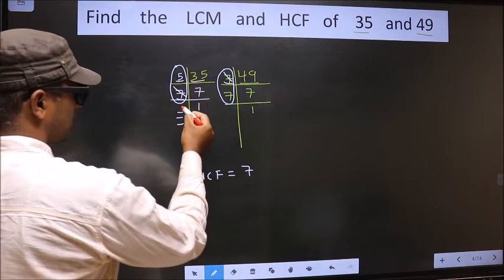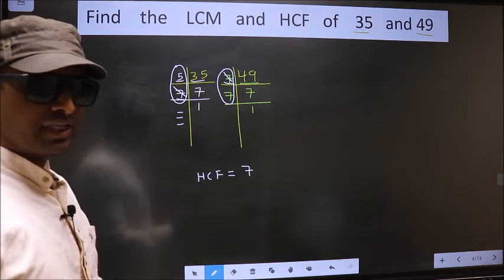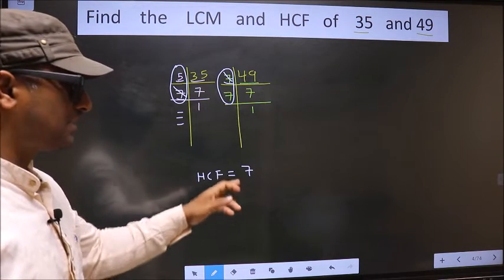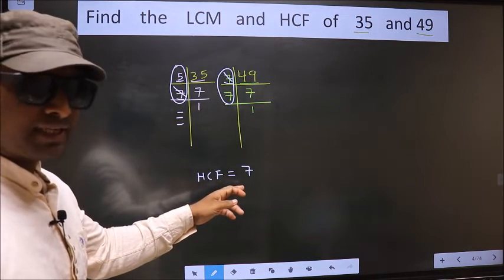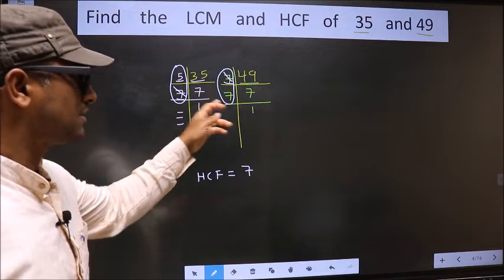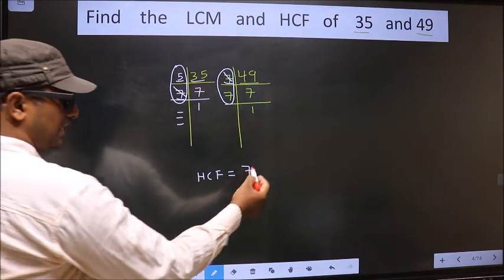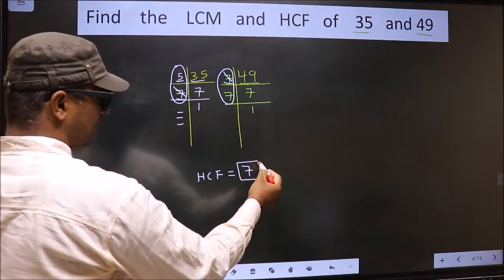No more numbers are left. Therefore, we got only one number, 7, present in both places. So 7 itself is our HCF.